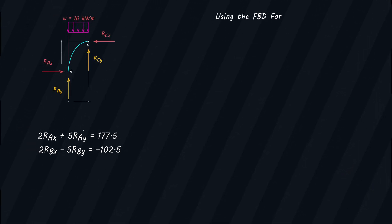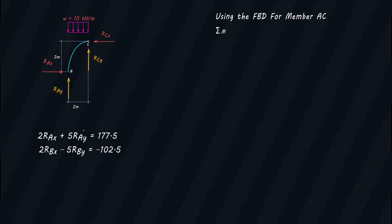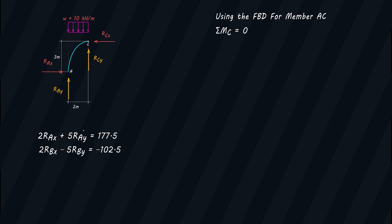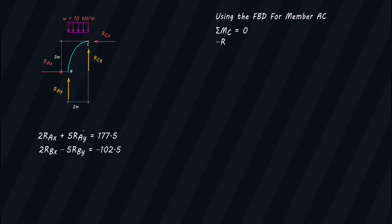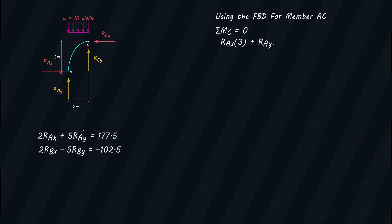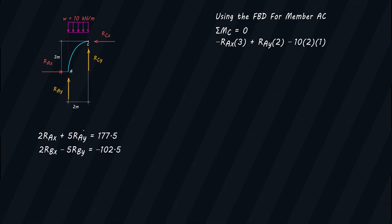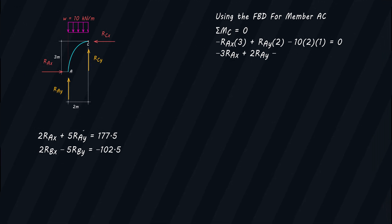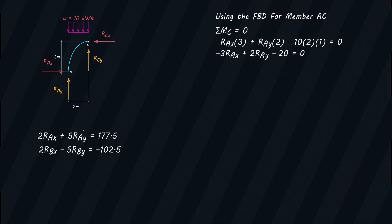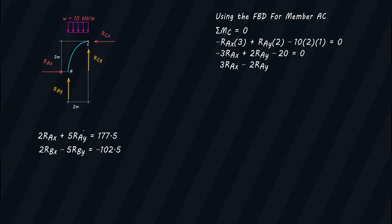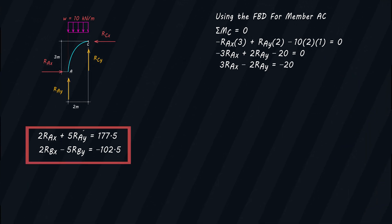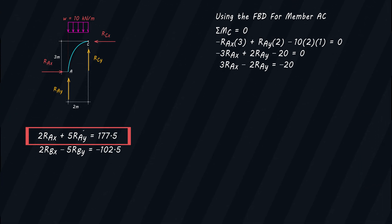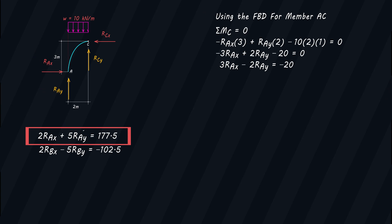Now using the free body diagram for member AC, I will sum the moments at point C, which also equals zero since our structure is in equilibrium. Taking clockwise moment as positive: negative RAX times 3 plus RAY times 2 minus 10 times 2 times 1 equals 0. Simplifying: negative 3RAX plus 2RAY minus 20 equals 0, giving us equation 3: 3RAX minus 2RAY equals negative 20. We can see that we now have an equation involving RAX and RAY, so technically we can already solve for them.